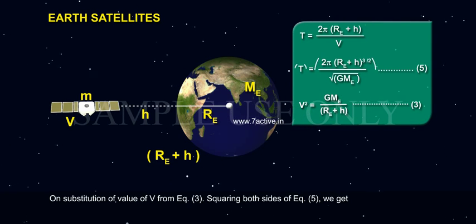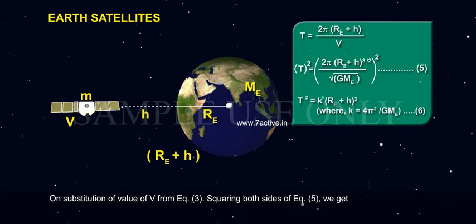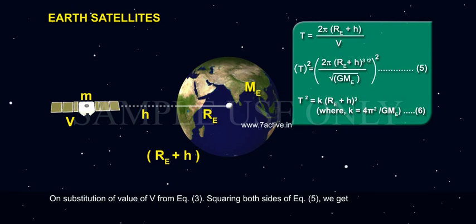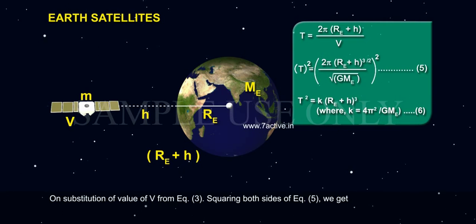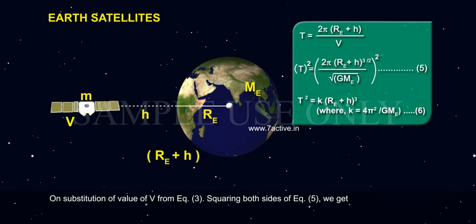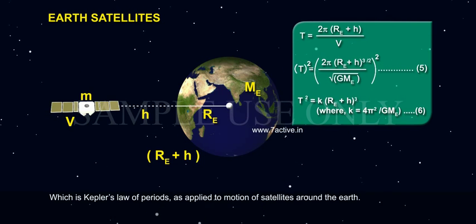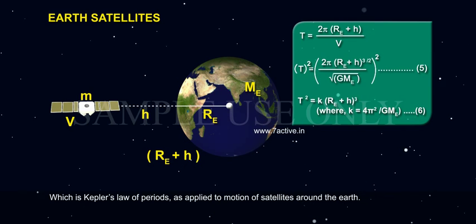Squaring both sides of equation 5, we get T² equals K(RE + H)³, where K equals 4π² divided by GME, Equation 6.